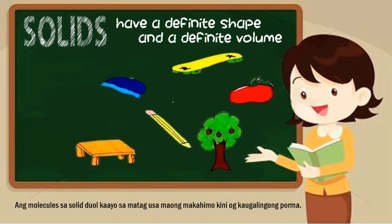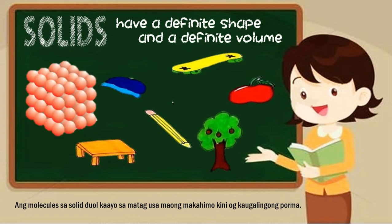Solid. Solids have a definite shape and a definite volume. The particles are close to each other, that's why they form a shape. These are examples of solids.